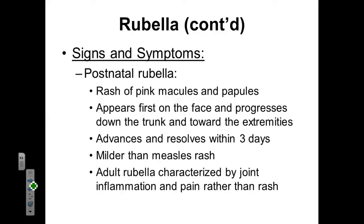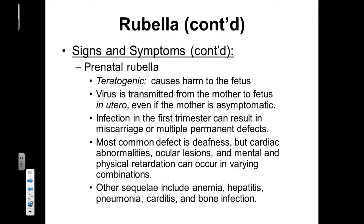If we look at an adult with rubella, they are going to have joint inflammation and pain rather than a rash. Sometimes adult rubella can be confused with getting old and having stiff joints, and occasionally it's misconstrued as Lyme's disease. If someone has prenatal rubella — a patient that is in utero — that rubella can be teratogenic. In other words, it's going to cause serious birth defects to the fetus. A teratogen is a chemical or condition that causes serious birth defects.